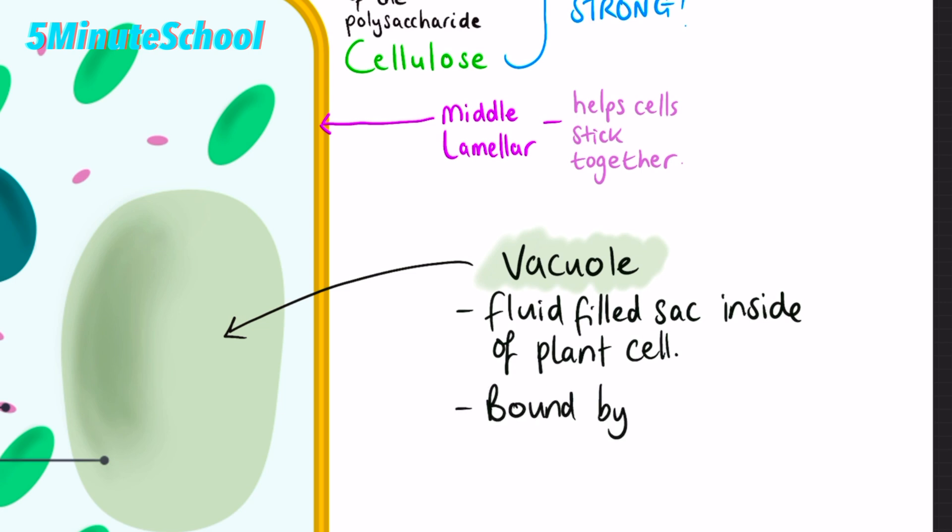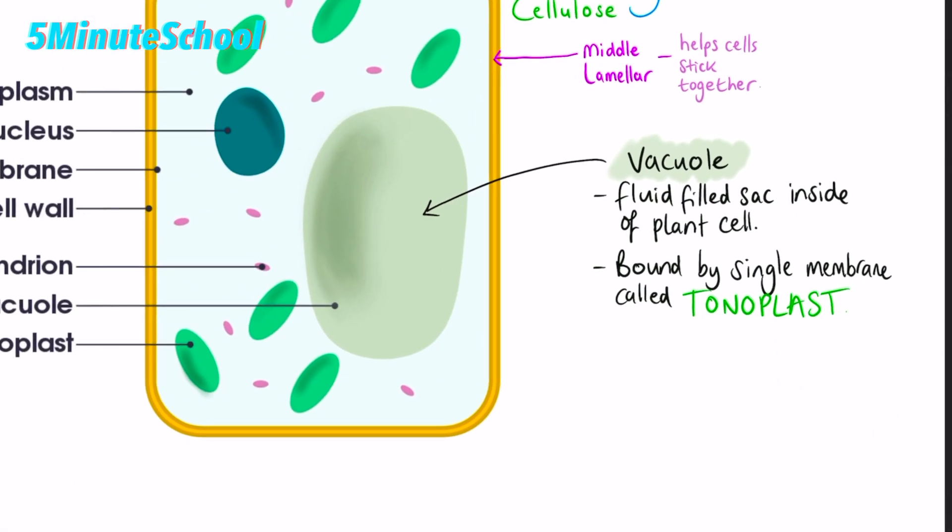It's bounded by a single membrane. This is a vacuole. This outer membrane of the vacuole is actually called a tonoplast.